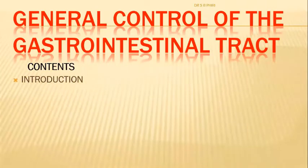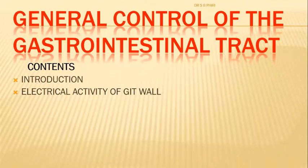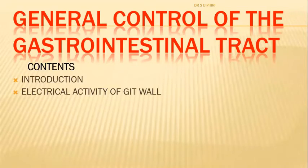In this lecture we'll cover an introduction to the general control of the gastrointestinal tract, and we'll look at the electrical activity of the GIT wall - the action potentials, how they are initiated and transmitted, and what nerve plexuses are involved. The GIT has its own intrinsic nervous supply called the enteric nervous system, which can also communicate with the extrinsic autonomic nervous system.